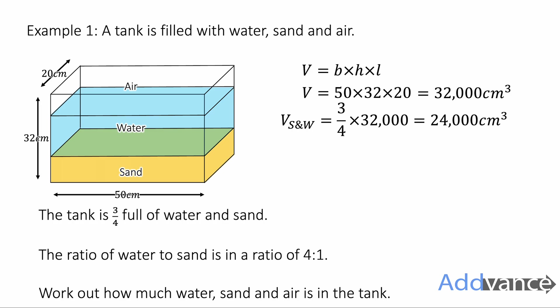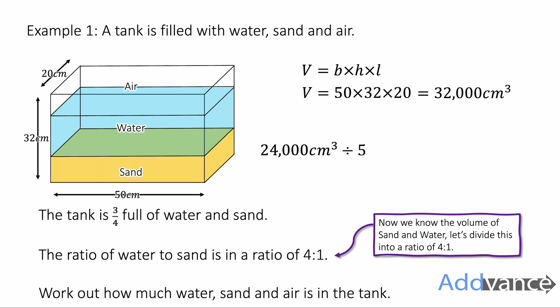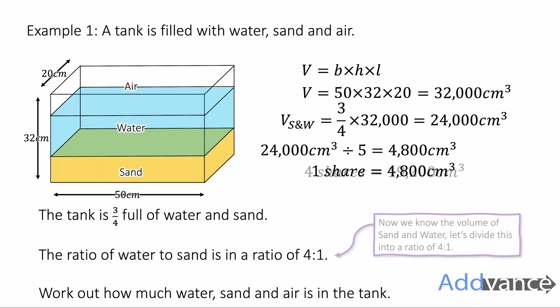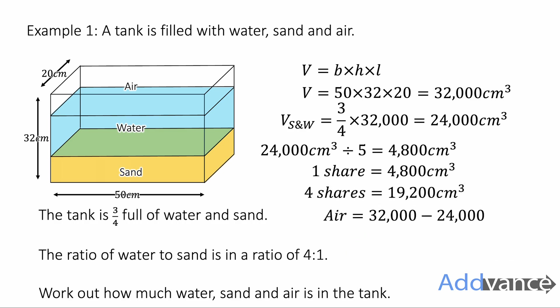That is shared in the ratio of 4 to 1, so four shares and one share. We'll start by dividing it by five and we get 4,800 cm³. That's one share. And then four shares is four times more, which is 19,200 cm³. That corresponds to water and sand. And the air is the amount of space left over, the 32,000 minus 24,000 is 8,000 cm³.